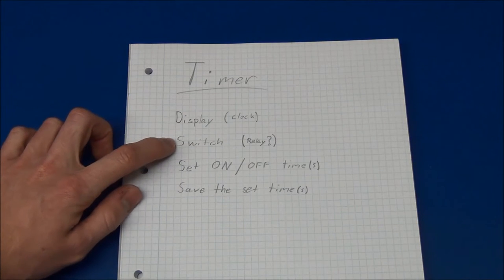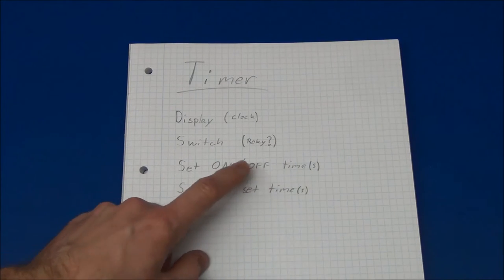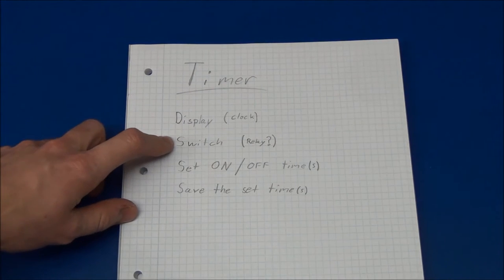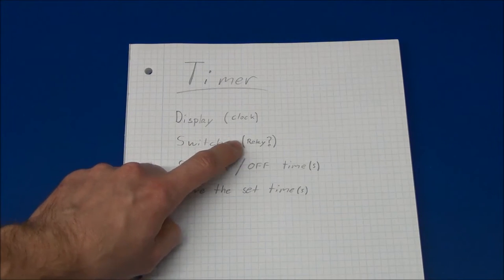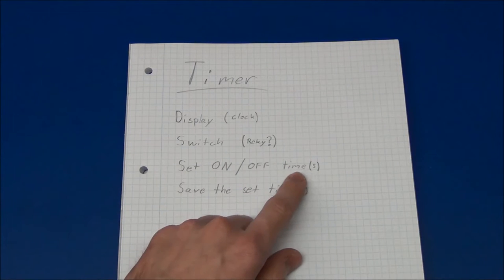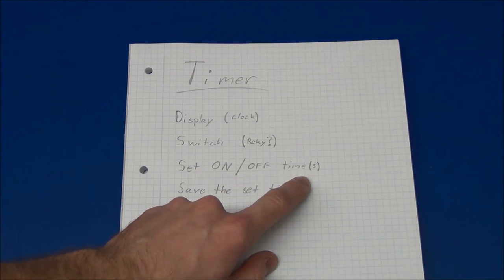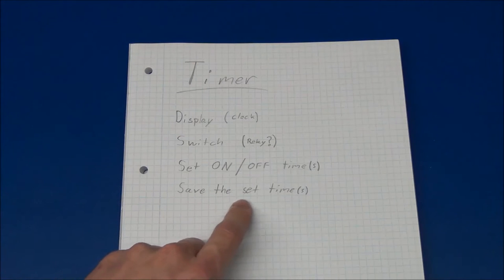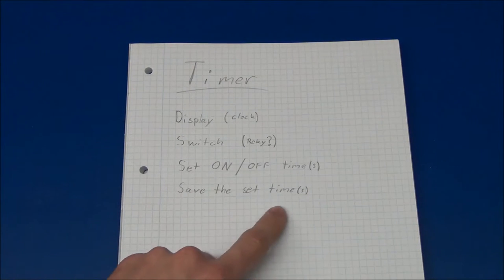I wanted it to act as a switch, so when we set an on and an off time it will switch the load on or off, and I'm thinking of using a relay for this. There could be more on and off times, I think I will need at least two. And I wanted to save the set time so if the unit is powered off it will remember.